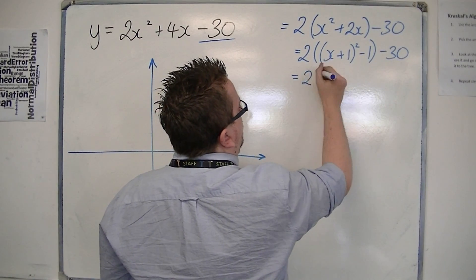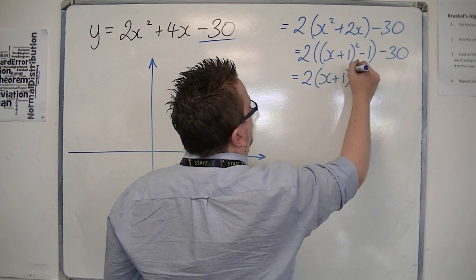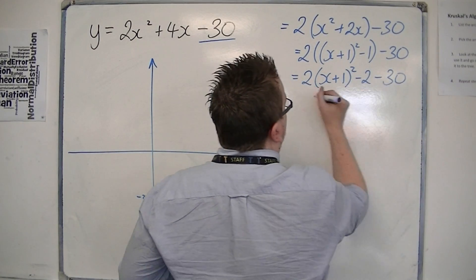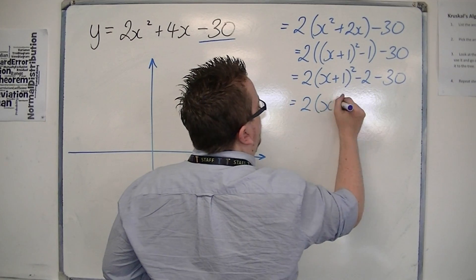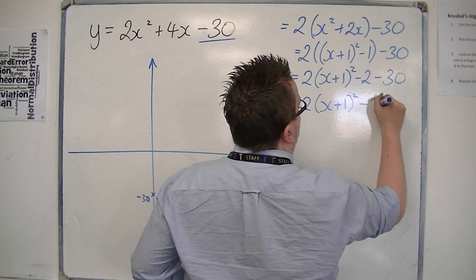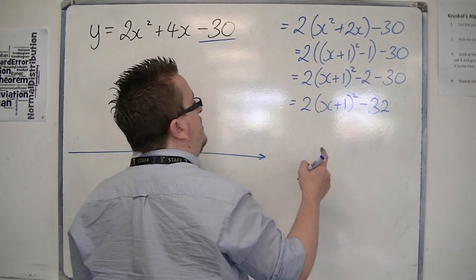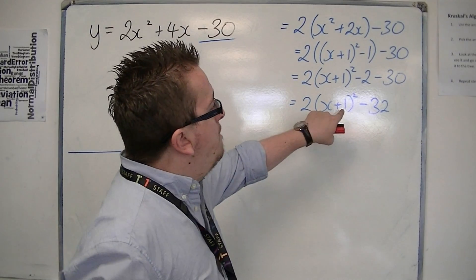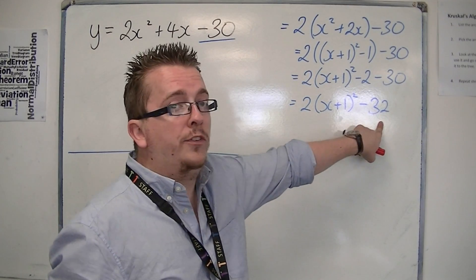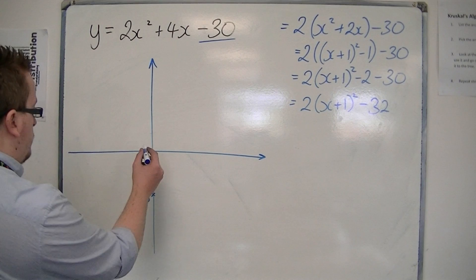Multiply through, so we've got 2 lots of x plus 1, all squared, take away 2, take away 30. So we've got 2 lots of x plus 1, all squared, take away 32. So the coordinates of the vertex are at minus 1, minus 32. So minus 1, minus 32.